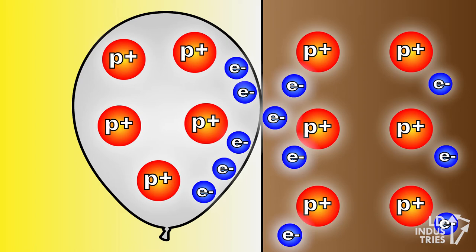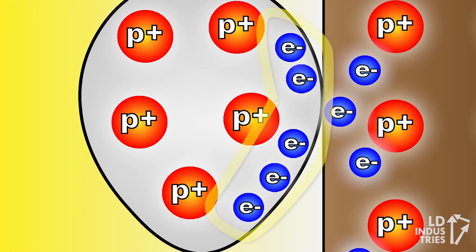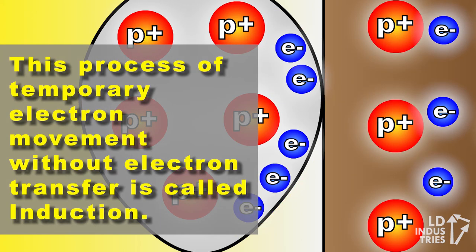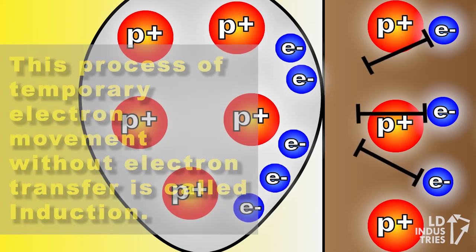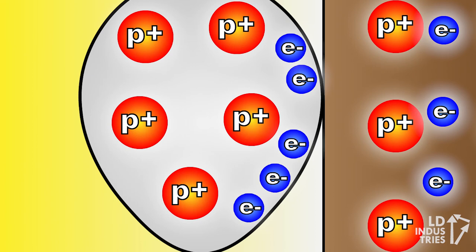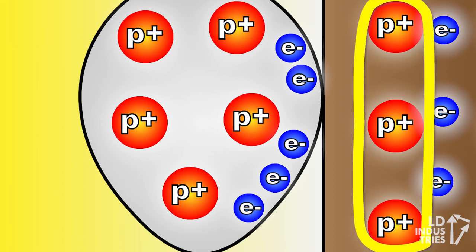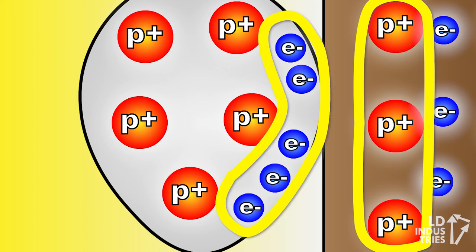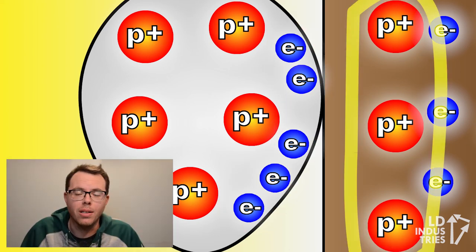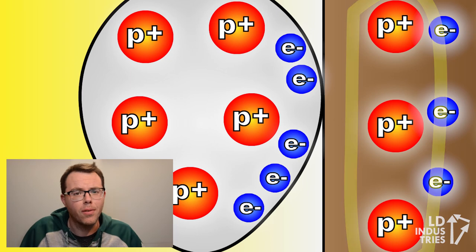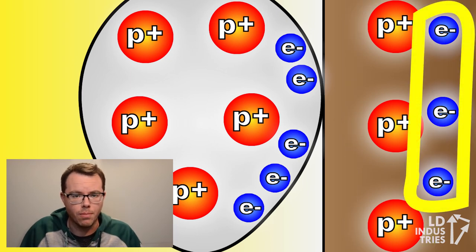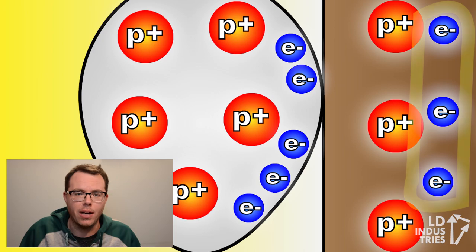The secret is in what's happening inside the wall. As the negatively charged balloon comes close to the wall, it applies a repulsive force to the electrons in the neutral wall. These electrons can't move very far because the wall is an insulator, but they can move a little. As those electrons move away from the balloon, the protons left over in the wall — still unmoving — are now closer to the balloon, so we get an attractive force. There are many more protons on the edge of the wall closest to the balloon than there are electrons that moved away, so we have an overall net attractive force.